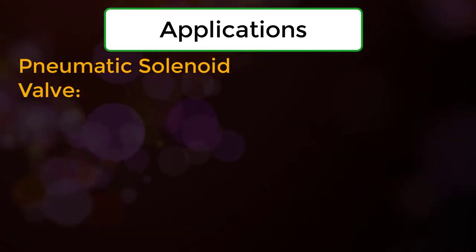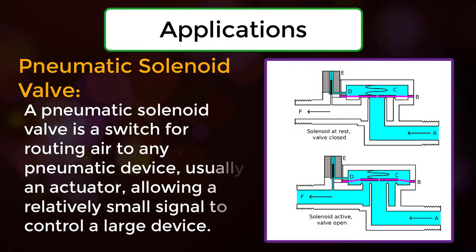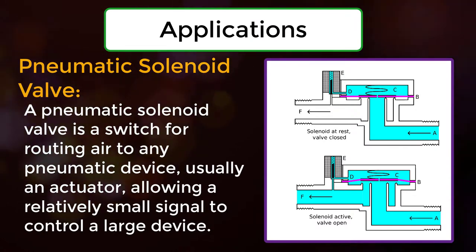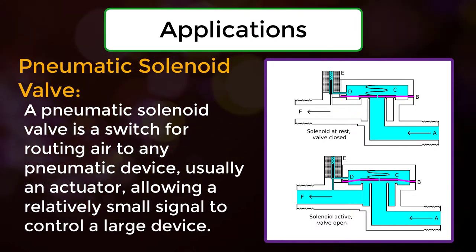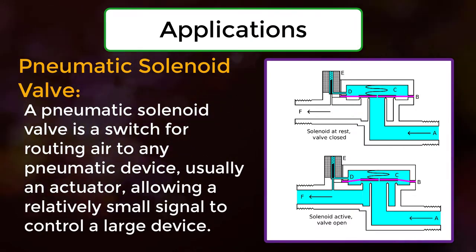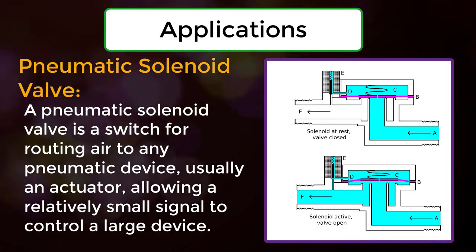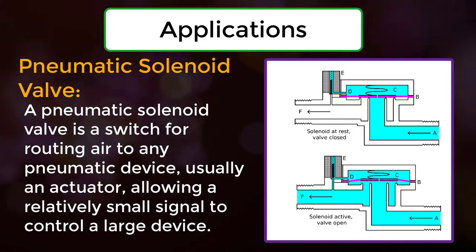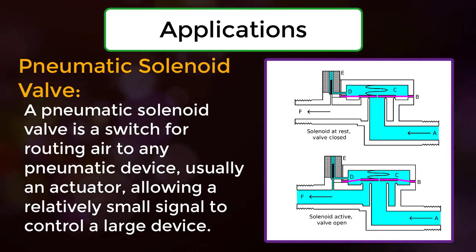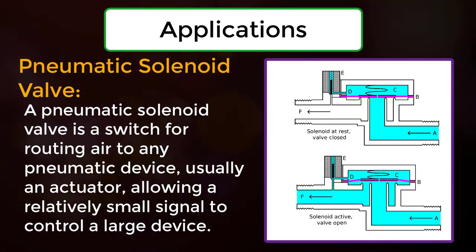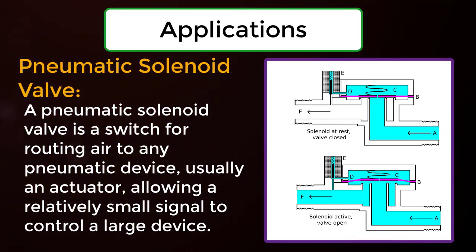Pneumatic solenoid valve: A pneumatic solenoid valve is a switch for routing air to any pneumatic device, usually an actuator, allowing a relatively small signal to control a large device.